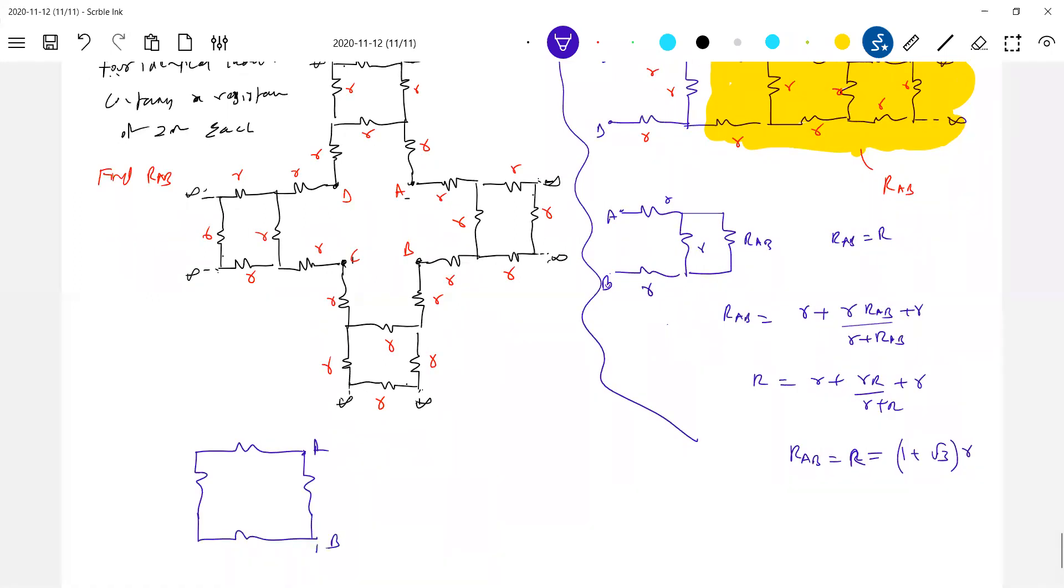This is A, this is B, C, and D. What should be the value of this? Everything, this value is r, capital R, capital R. Then effective resistance between points A and B is what is asked.